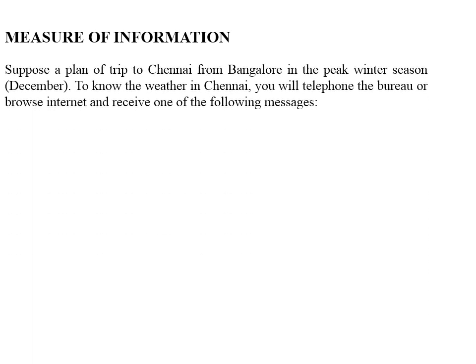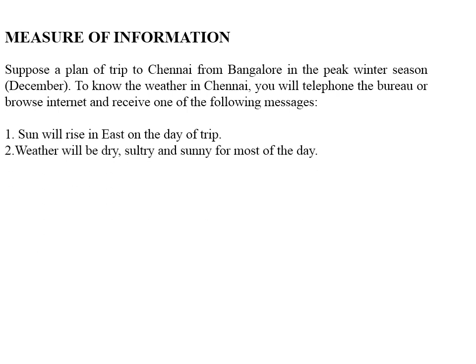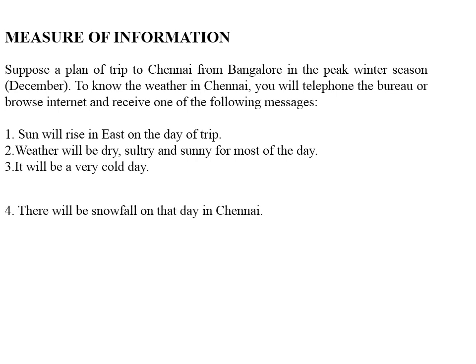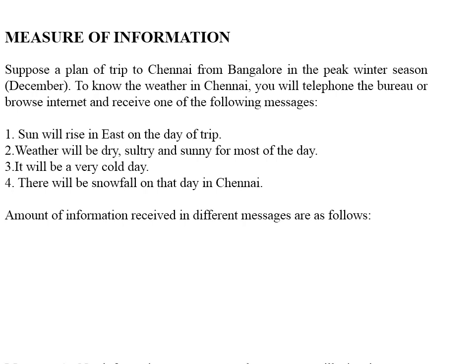Suppose a plan of trip to Chennai from Bangalore in peak winter season is made. To know the weather in Chennai, you will either telephone the bureau or browse over the internet and receive one of the following messages: first, sun will rise in east on that day of trip; second, weather will be dry, sultry and sunny for most of the day; third, it will be a very cold day; fourth, there will be a snowfall on that day in Chennai. We will see how the amount of information varies in these four different messages.